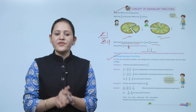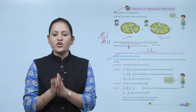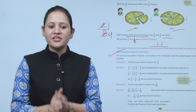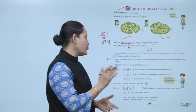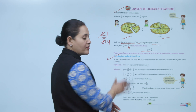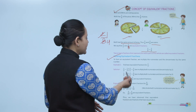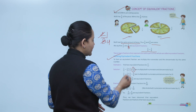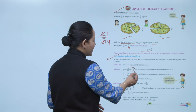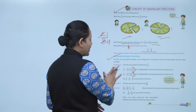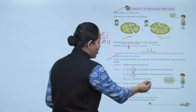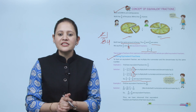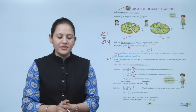To form an equivalent fraction, we multiply the numerator and denominator by the same number. Example: find 2 equivalent fractions for 1 by 3. Multiply both numerator and denominator by 2 to get 2 by 6. Multiply by 3 to get 3 by 9. So 1 by 3, 2 by 6, and 3 by 9 are all equivalent fractions.